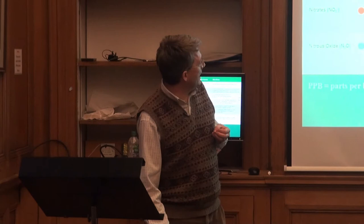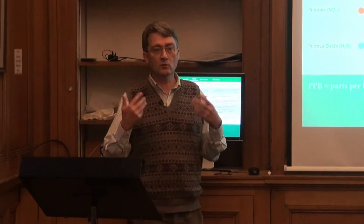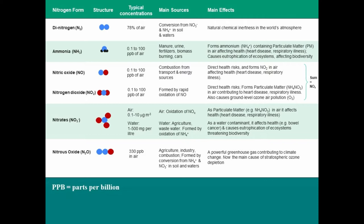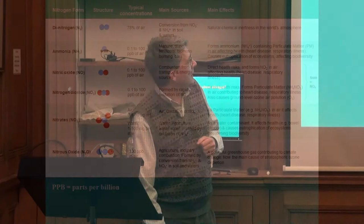Nitrous oxide is a greenhouse gas — very stable — and it also absorbs radiation from the sun, giving it a radiative forcing effect. I haven't even listed all nitrogen compounds, just some of the main small ones with links to environmental effects. Already you can see I've mentioned air pollution, water pollution, and greenhouse gas balance — so you can see why nitrogen has several impacts.